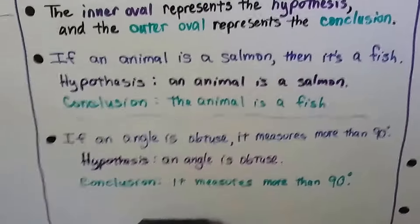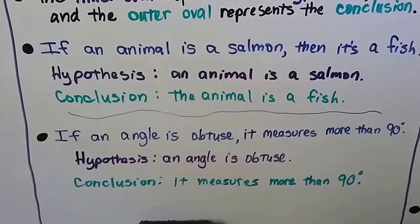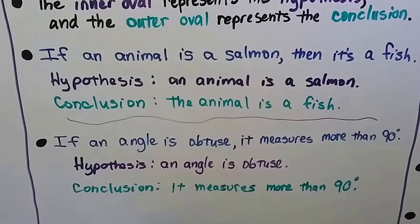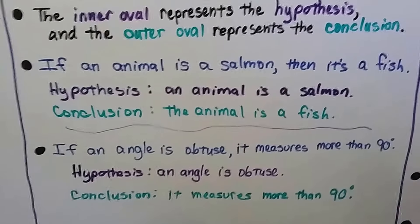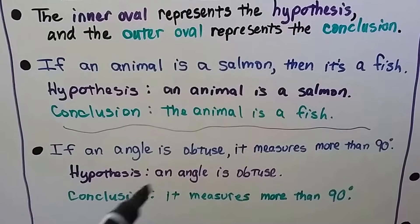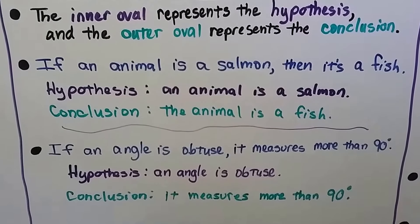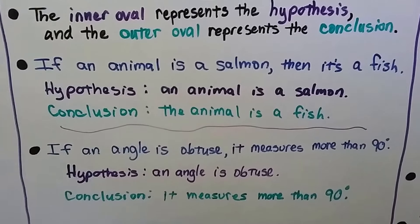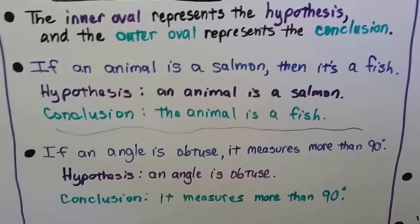Here's another one. If an angle is obtuse, it measures more than 90 degrees. The hypothesis is 'an angle is obtuse,' the conclusion is 'it measures more than 90 degrees.' And that's true.